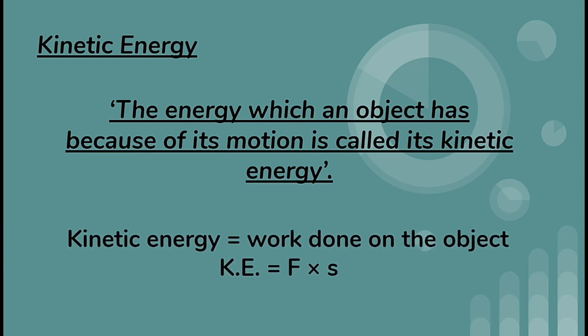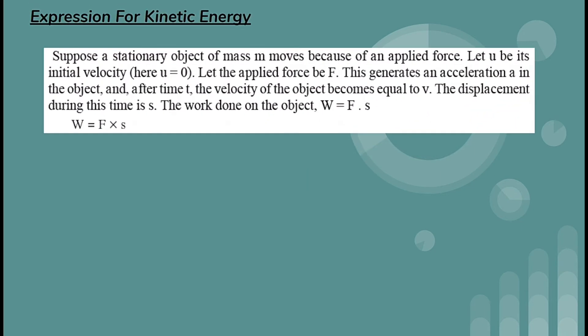Kinetic energy is the energy which an object has because of its motion. Kinetic energy is equal to the work done on the object: KE = F × s. To derive the expression for kinetic energy, suppose a stationary object of mass m moves because of an applied force.